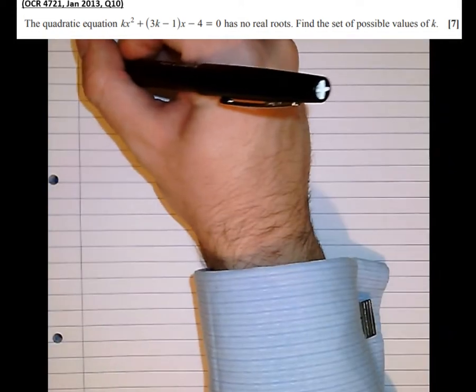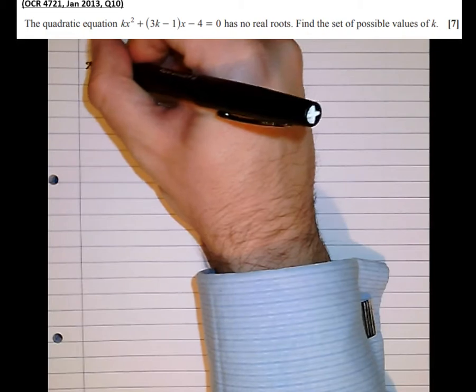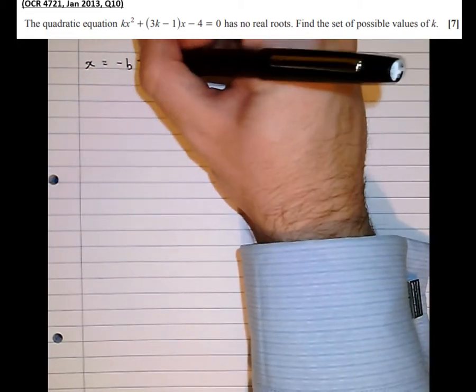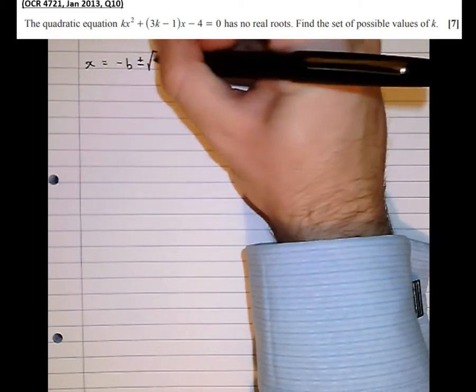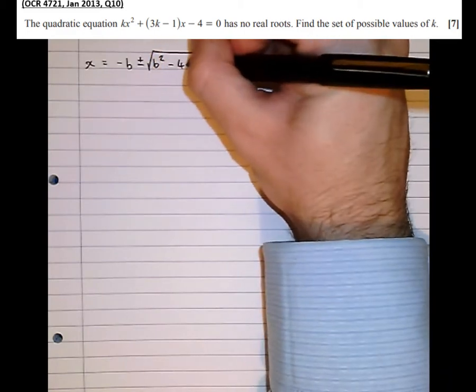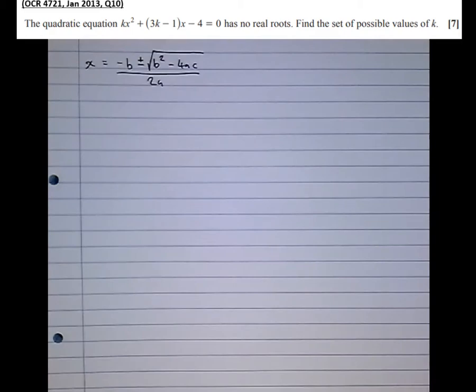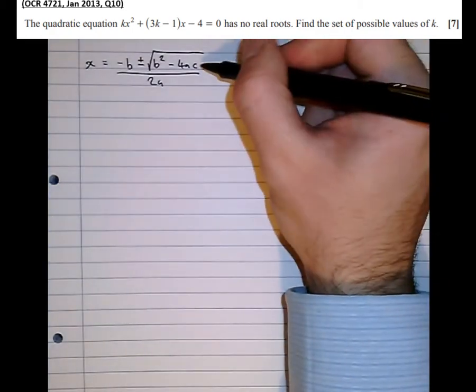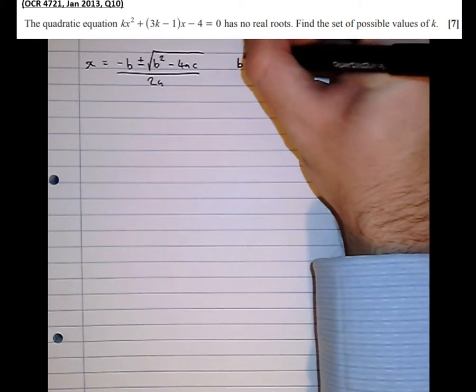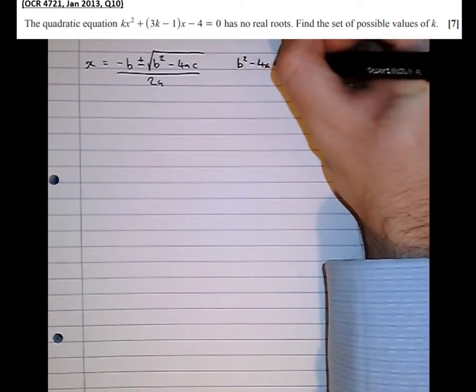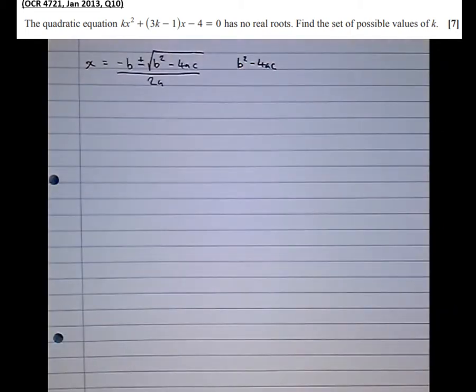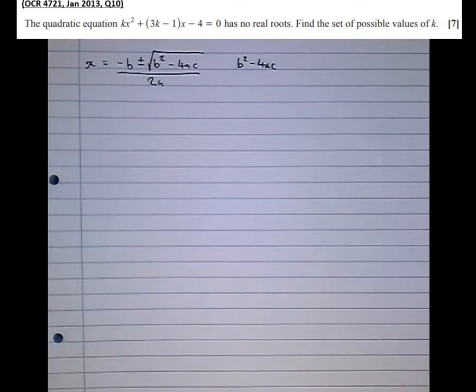So first of all I'm going to write out the quadratic formula for solving quadratic equations which is minus b plus or minus the square root of b squared minus 4ac over 2a and you know that from GCSE. So looking at this here the discriminant is the bit under the square root sign b squared minus 4ac. Not root of b squared minus 4ac but just the b squared minus 4ac itself.